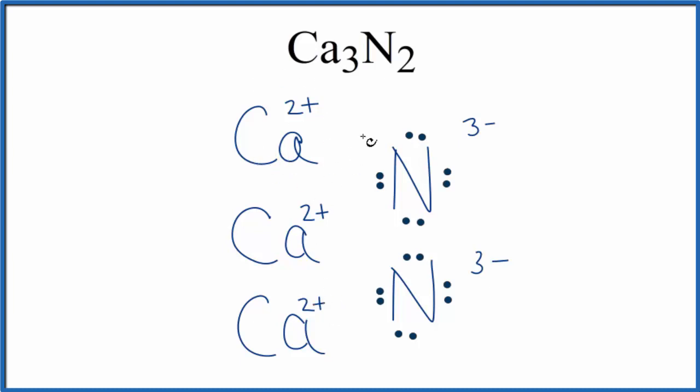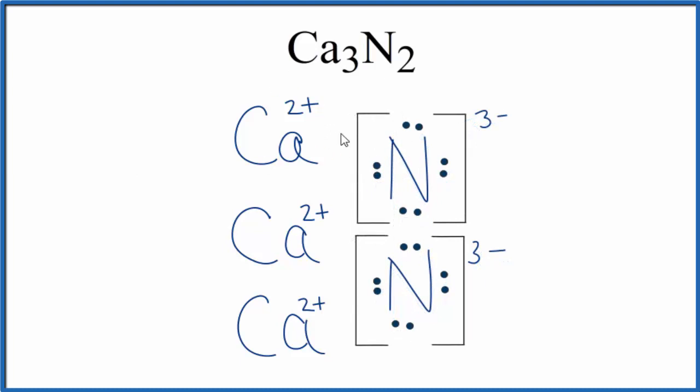Since these calciums have lost their electrons, the nitrogens have gained them, let's put brackets around the nitrogens to show that the electrons are now with the nitrogen atoms. Since we have these positive charges here and these negatively charged particles here, they're attracted. That's what forms the ionic bond.